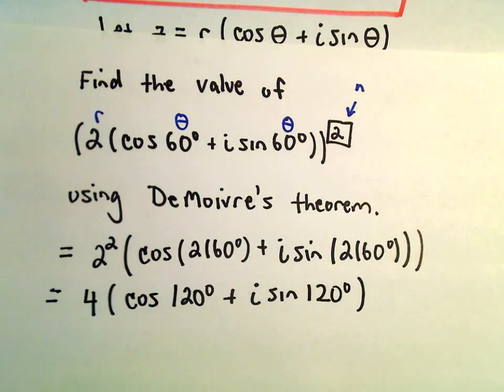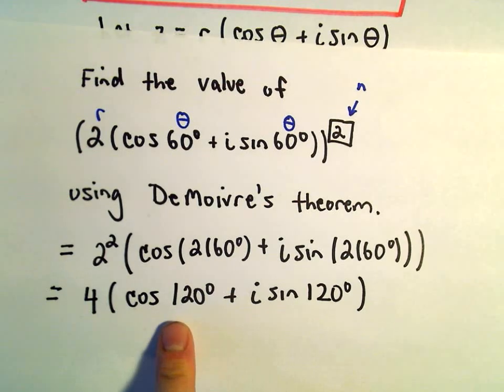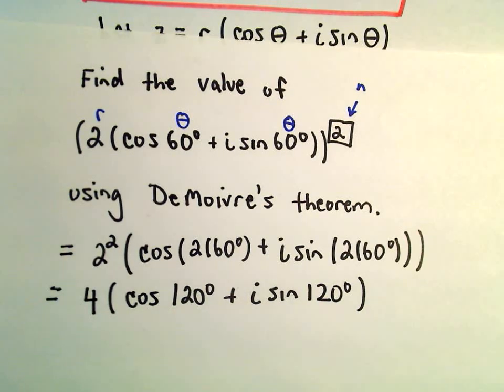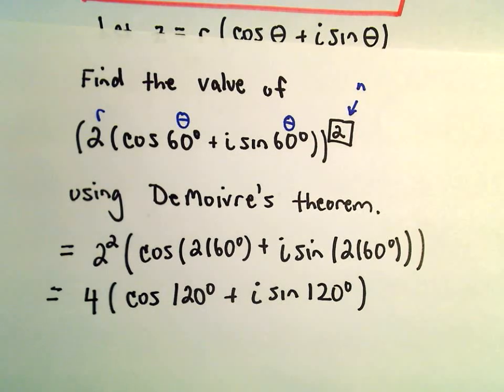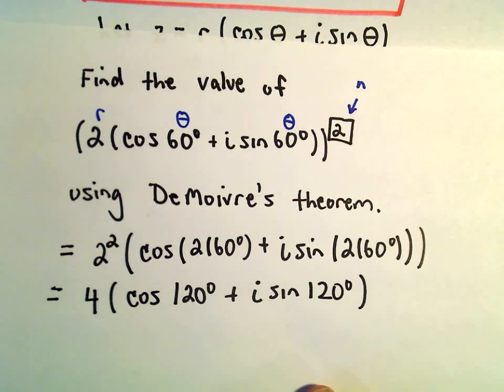And you know, you can always keep going. You can evaluate cosine of 120, sine of 120, simplify this a little further. Or we can always just leave it in the polar form, which is what I'm going to do here.